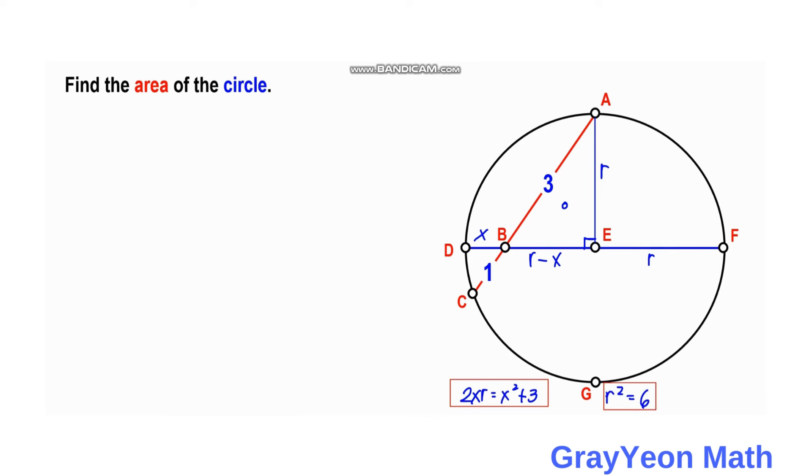For the area of the circle, we use the formula A equals pi R squared. Since R squared equals 6, we substitute to get area equals 6 pi square units. That is our answer.